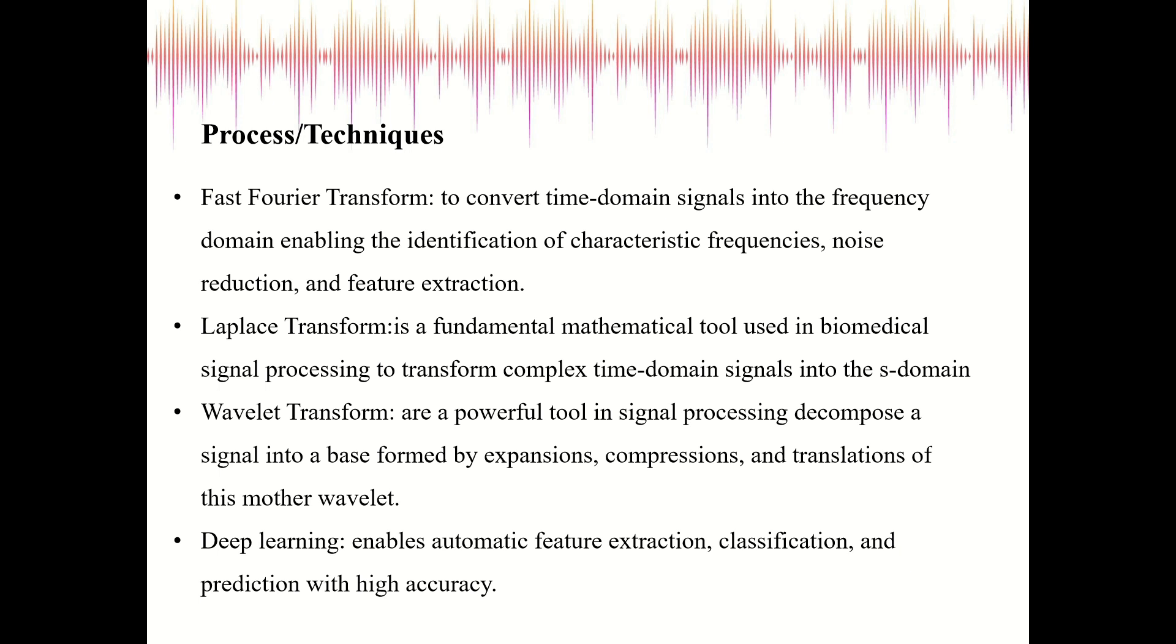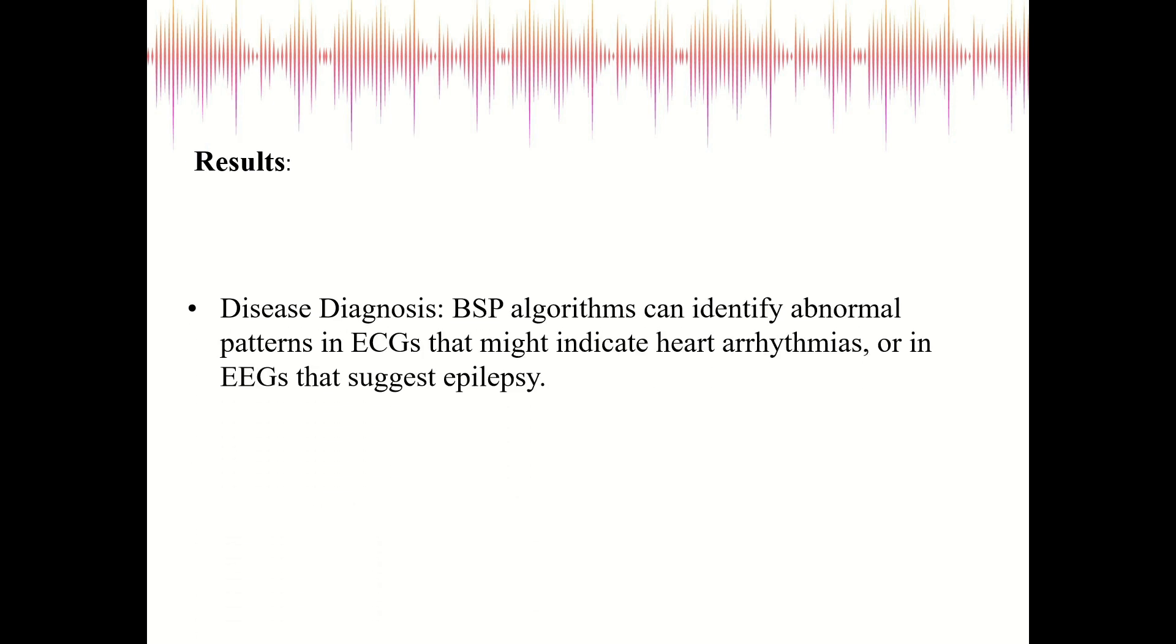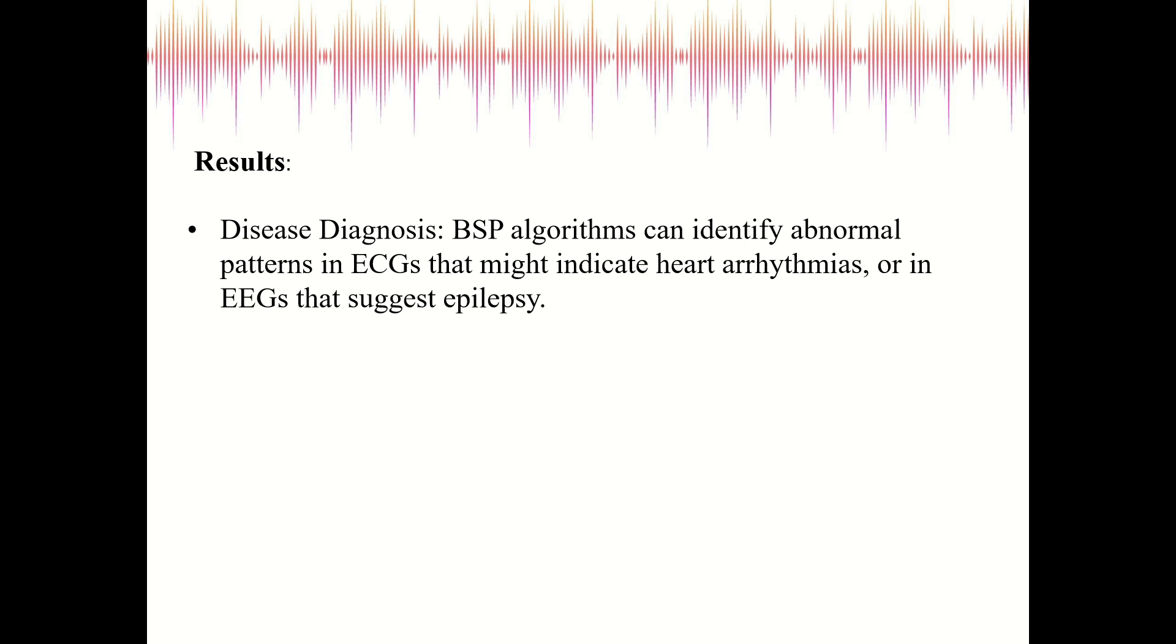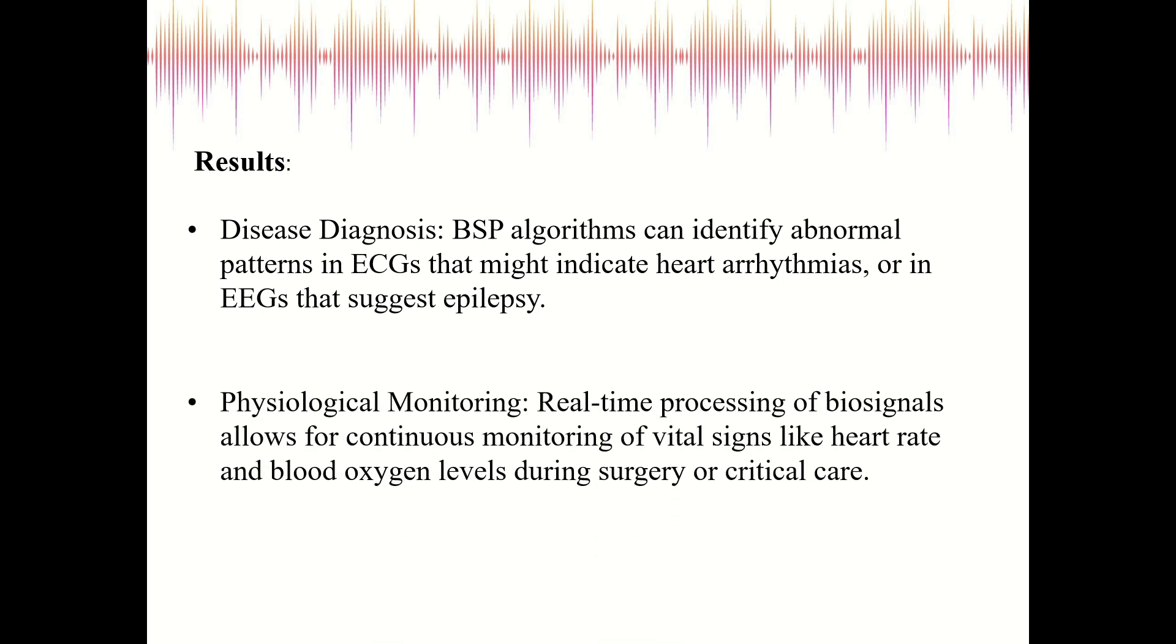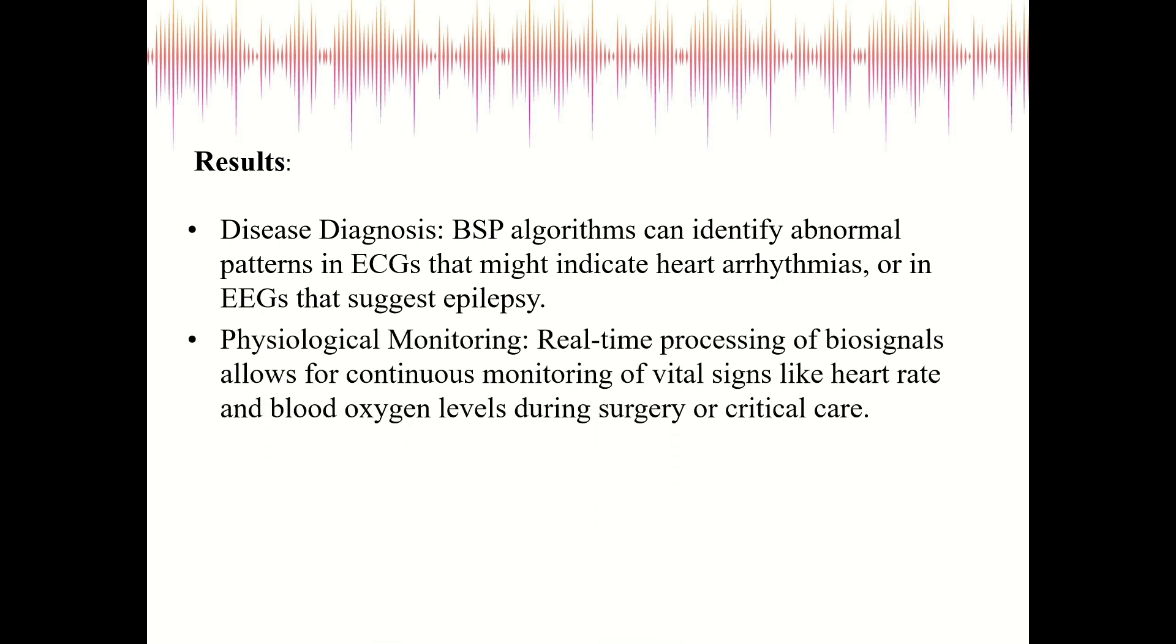Results: disease diagnosis. Biomedical signal processing algorithms can identify abnormal patterns in ECGs that might indicate heart arrhythmias. Arrhythmia is an irregular heartbeat, which is a problem with the rate or the rhythm of your heartbeat, or in EEGs that suggest epilepsy.